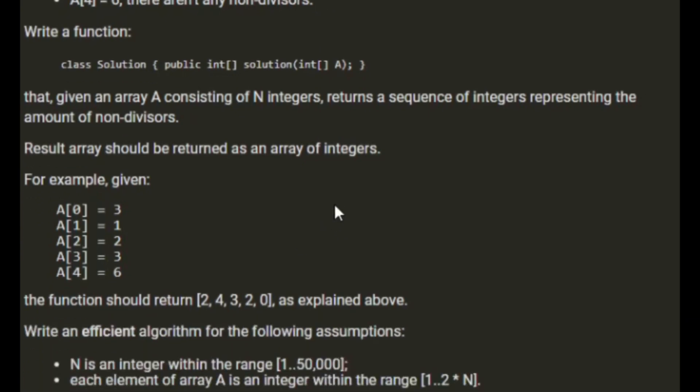Write an efficient algorithm for the following assumptions. N, which is the length of the array, is an integer within the range of 1 and 50,000. And each element of array A is an integer within the range of 1 to 2 times N.